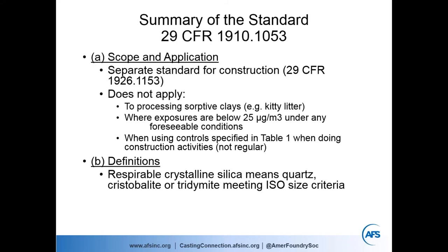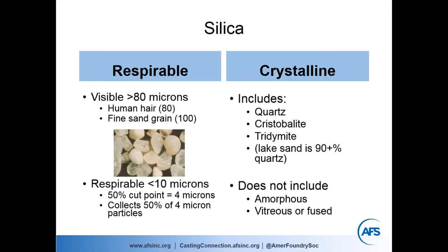One of the definitions in the standard is respirable crystalline silica. When we use the term 'respirable,' we're talking about very small particles. Visible particles tend to be over 80 microns — a human hair is about 80 microns, fine sand grains are 100 microns or larger. Respirable dust is below 10 microns. At 4 microns we collect 50% of particles — the cut point. At about 1 micron we collect 99–100% of those very small particles.